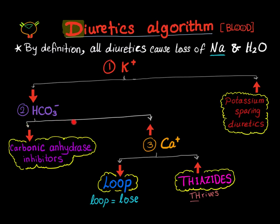But if the bicarbonate level in the blood is normal or high, you have to look at calcium. If the calcium is low, that's a loop diuretic. If the calcium is high, these are the thiazide diuretics. A mnemonic to remember that: loop makes you lose calcium, and thiazides make the calcium thrive. So — loop: lose; thiazide: calcium thrives.